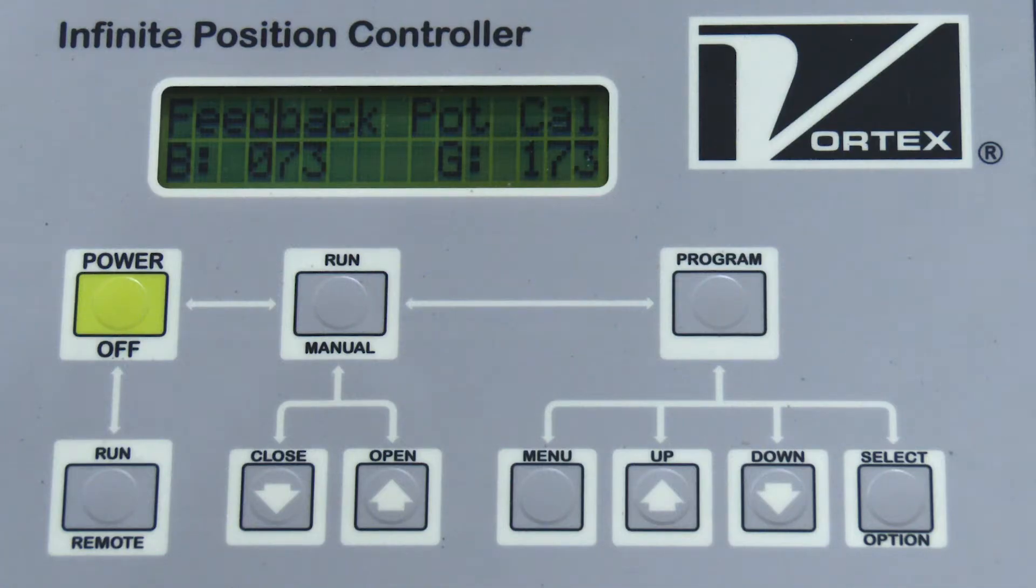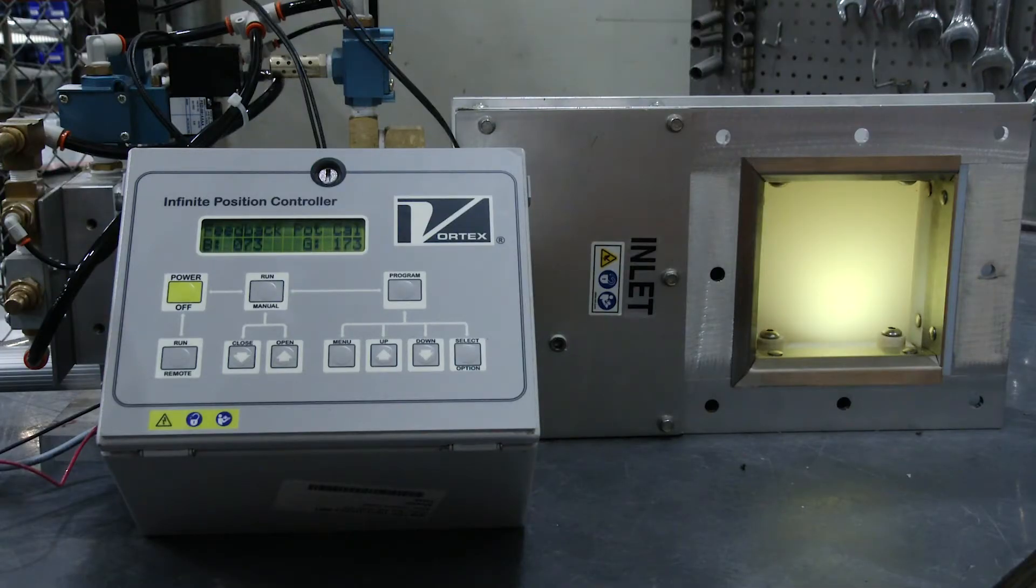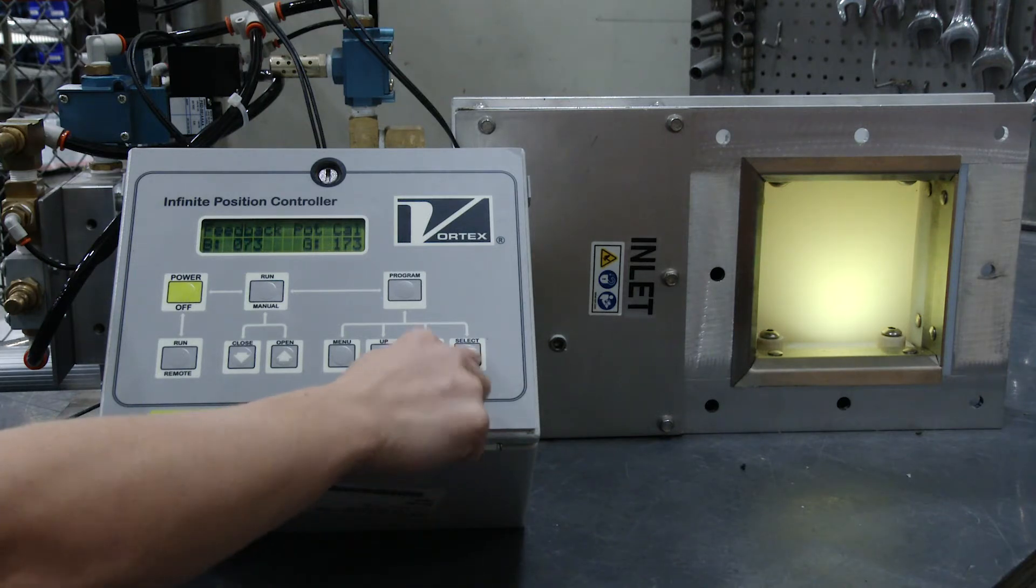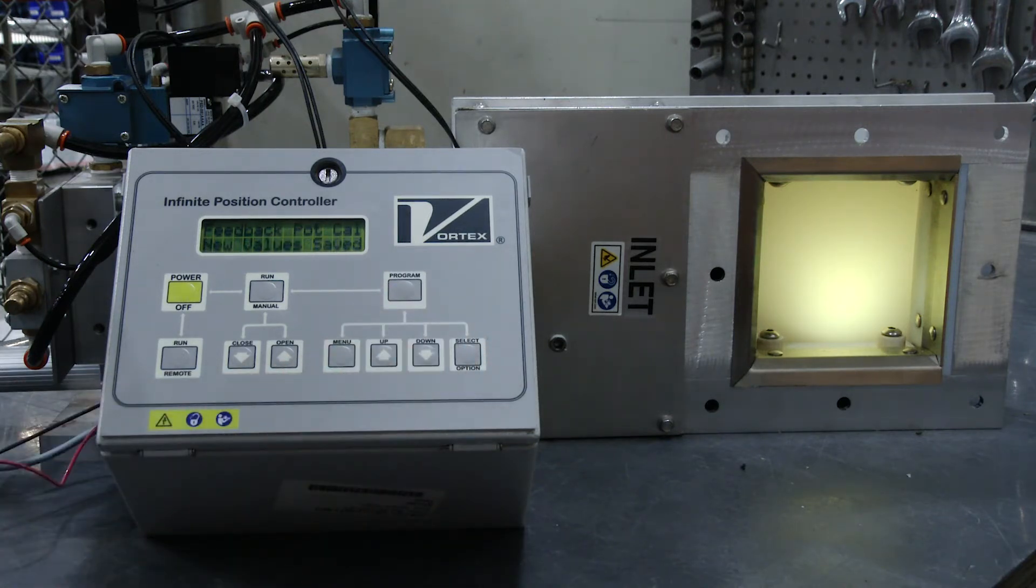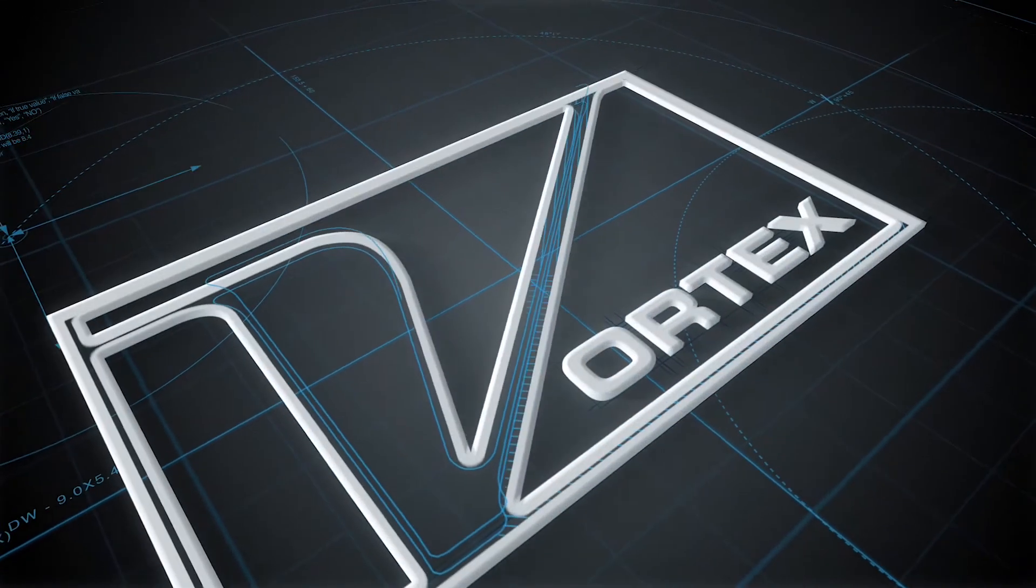The second line of the IVP display now shows the Open and Closed representative values. To save the values and complete the calibration of the Feedback Potentiometer, press Select Option again. This completes the Feedback Potentiometer calibration of the IVP.